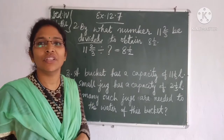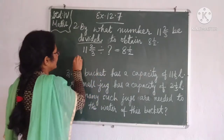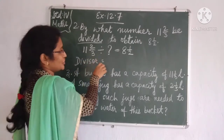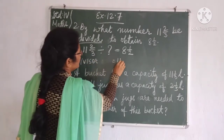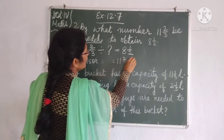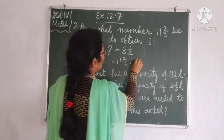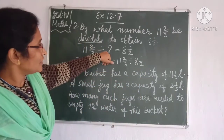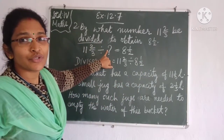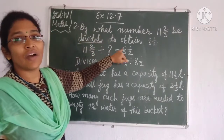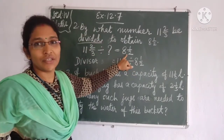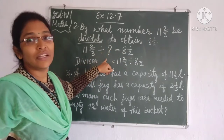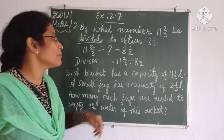How can we find out the divisor? To find out the divisor, we do: dividend divided by quotient. When you do this process, you will get the divisor, which is the missing number.